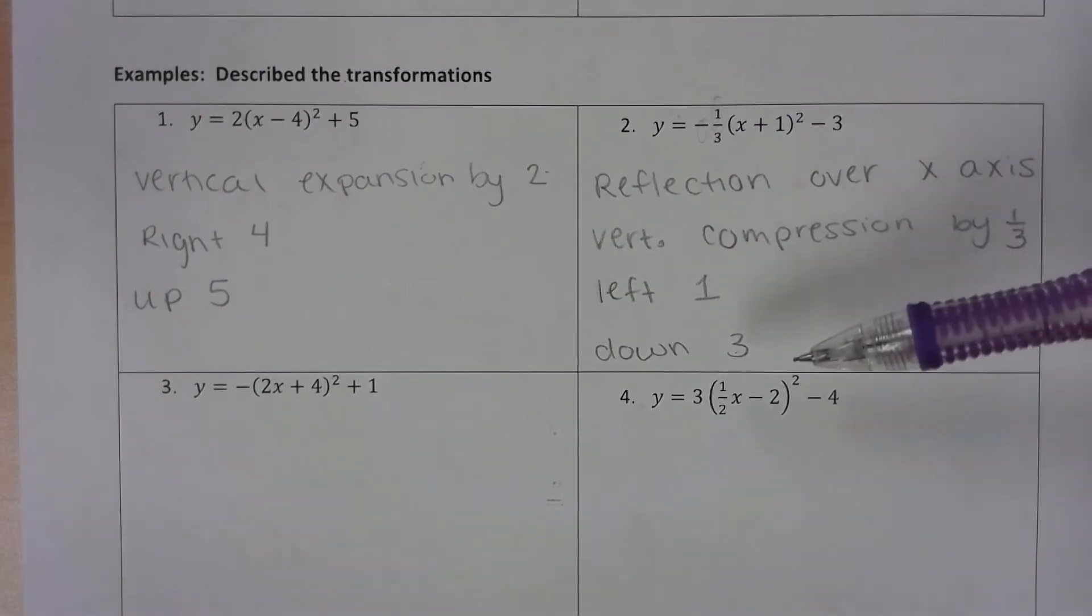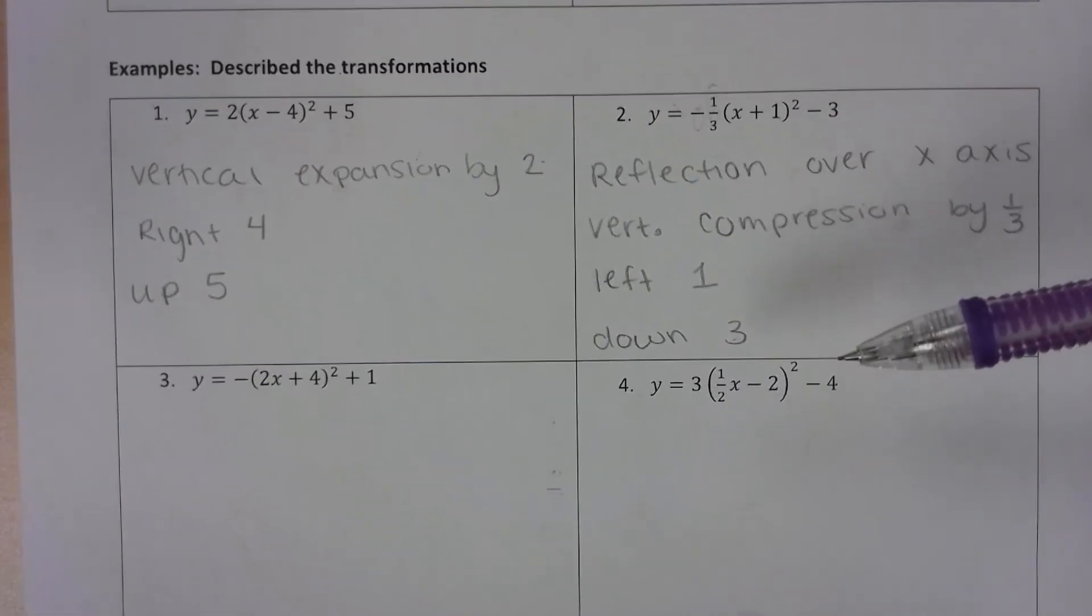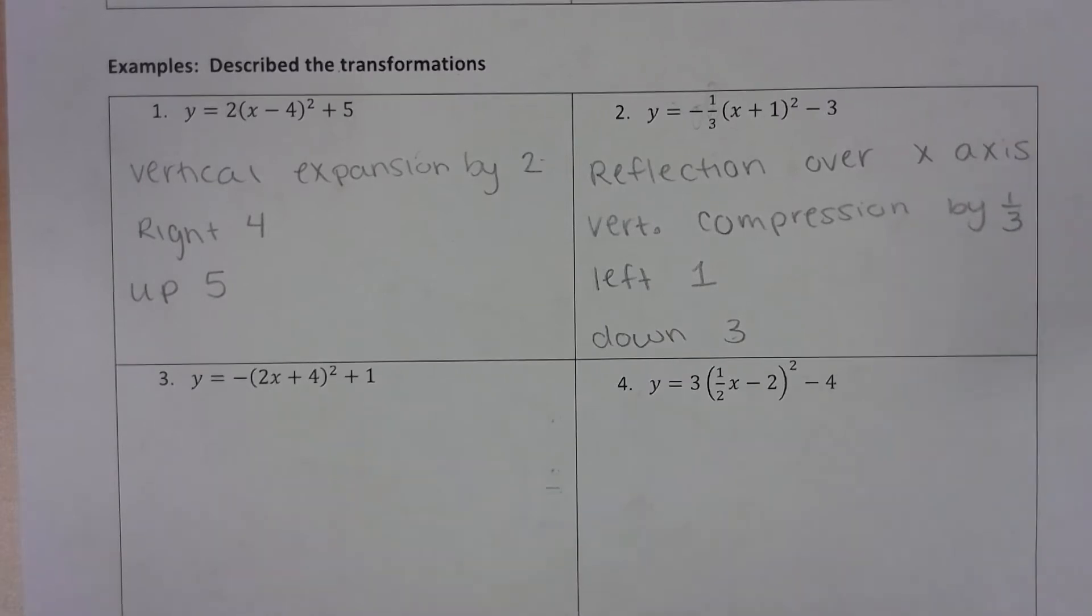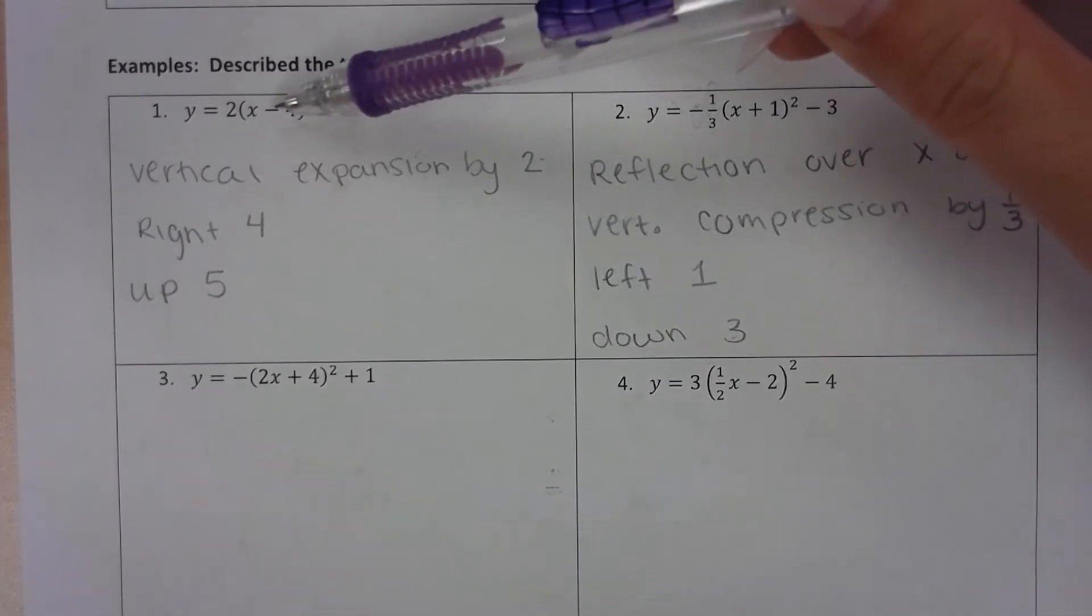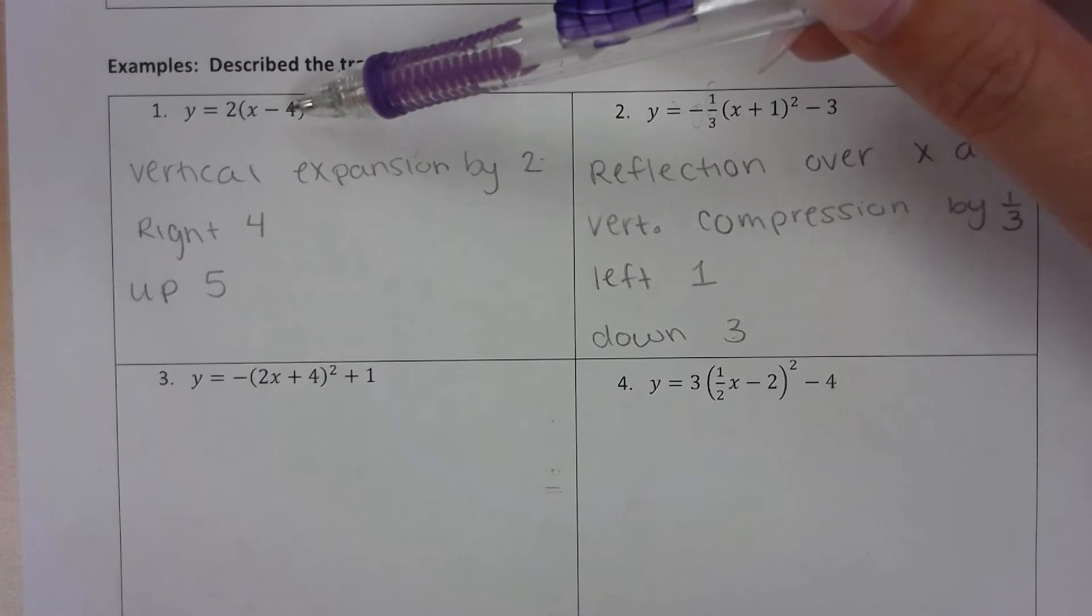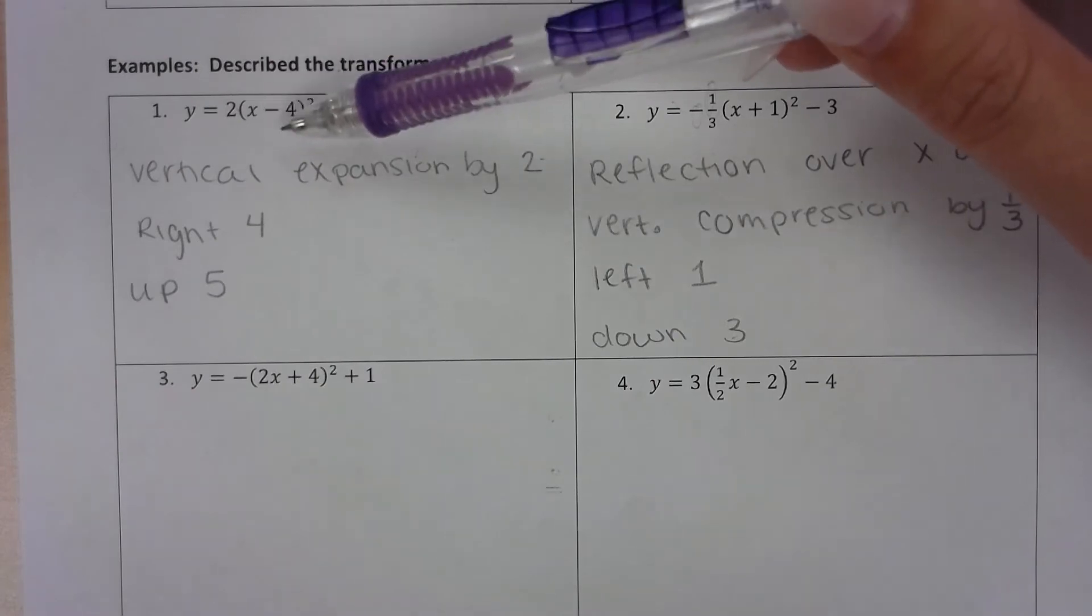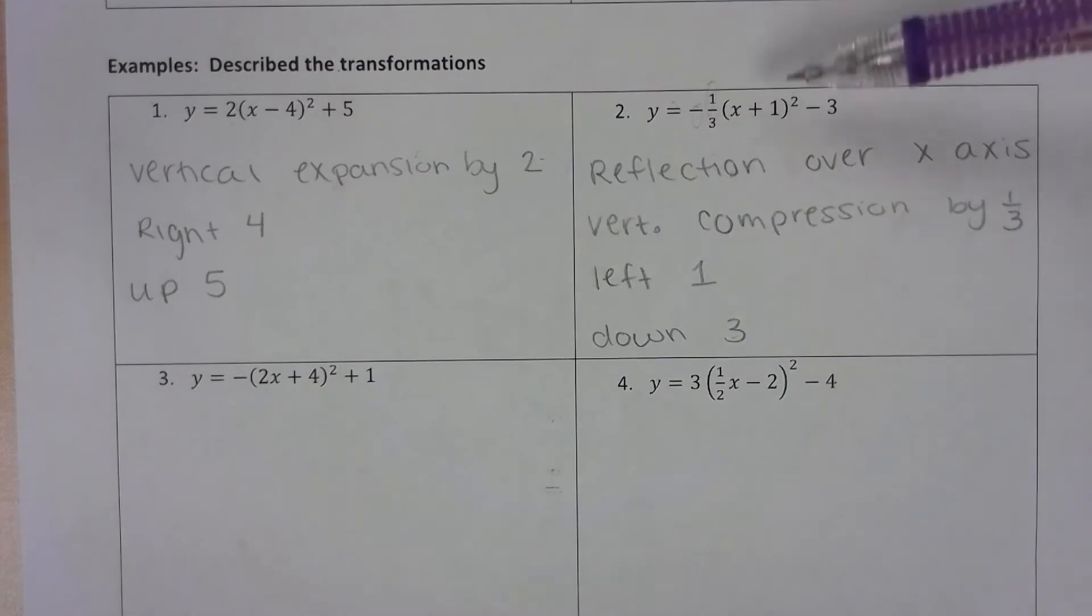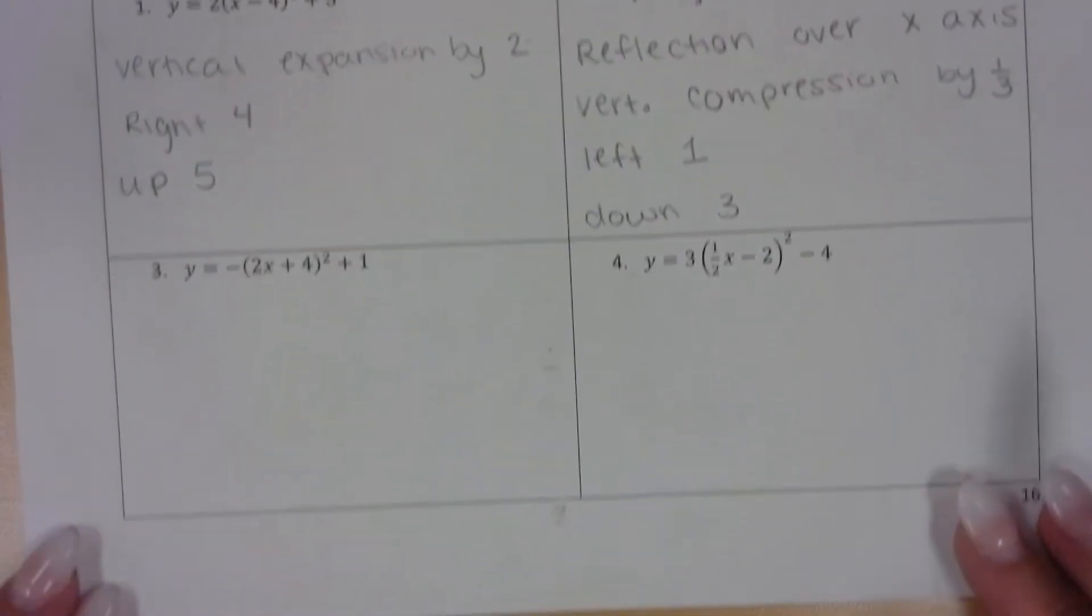Now anything inside the parentheses is going to be a horizontal expansion or compression or a horizontal shift, and anything with the word horizontal is opposite of what you would think. So a negative 4 we would probably think means left 4, but anything with the x we think opposite. So if it's a negative 4, it's actually moving right 4, and if it's a positive 1, it's actually moving left 1. Anything with the y, it's what you would usually think. Anything with the x, you should think opposite.